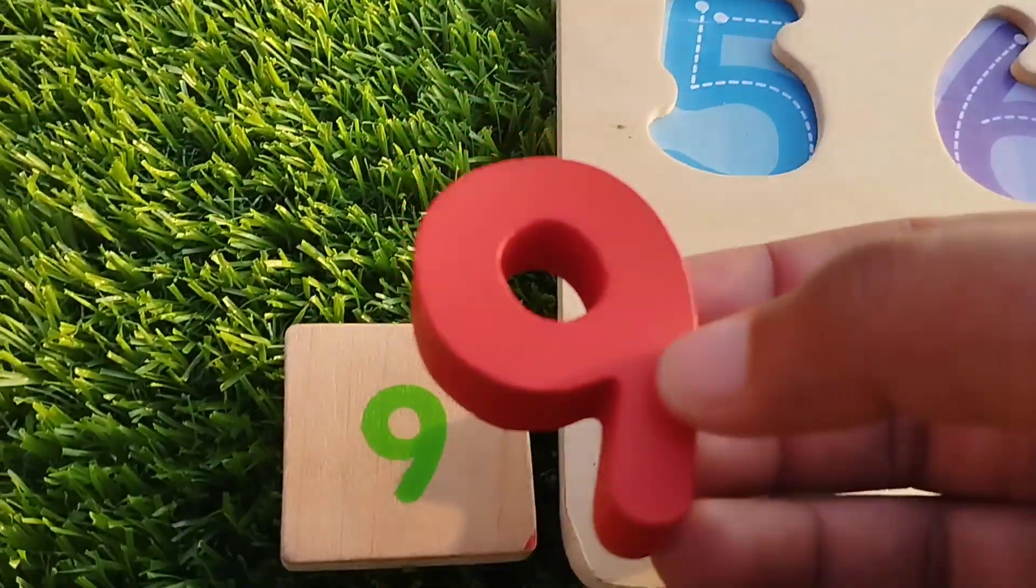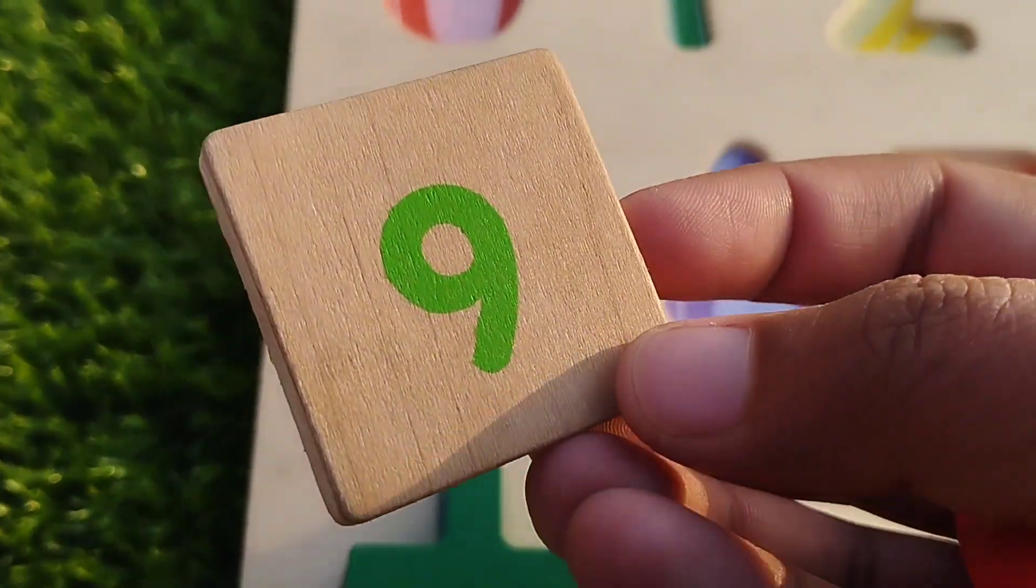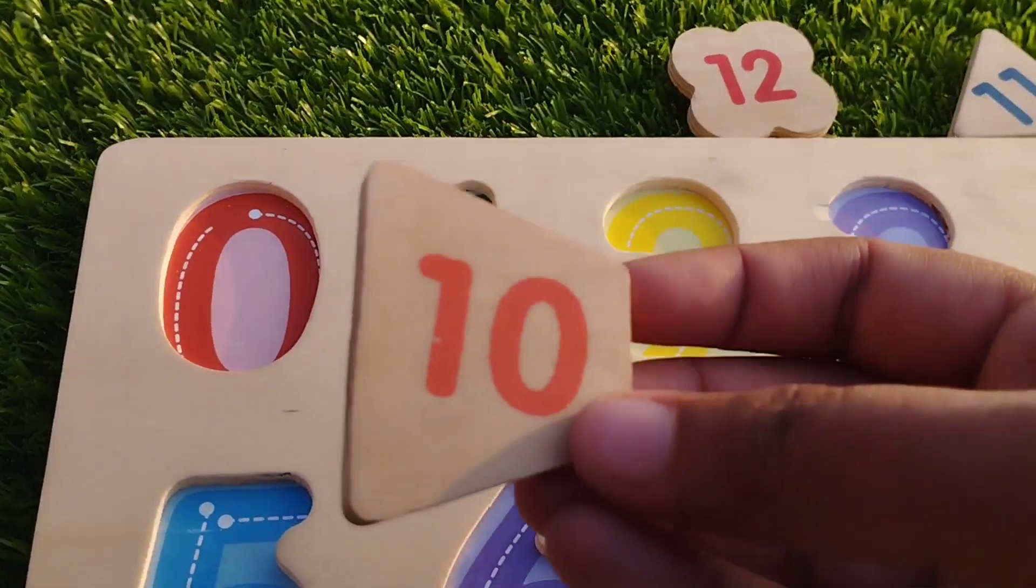Number nine. Number nine is square. And the next number is ten.